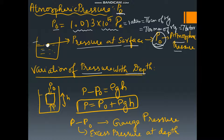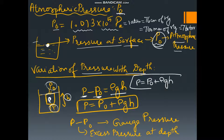Let us see the variation of pressure with depth. Suppose there is a hollow cylinder of height h dipped inside water of density rho. The pressure at the surface is P0. Let the pressure at depth be P. Then P − P0 = ρgh, so P = P0 + ρgh. This is a very important formula. H is the height from the surface of the water.